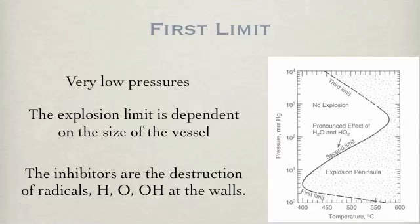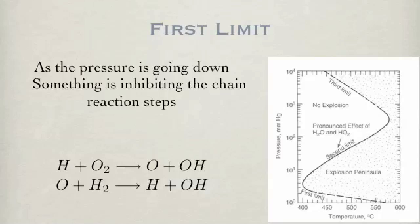The first limit is at very low pressure, well below atmospheric pressure. Experimental evidence shows that the explosion limit is dependent on the size of the vessel. This points to the destruction of radicals at the walls. Low pressure, with the reactions with the wall being more prominent, means that the number of collisions to produce the chain reaction is relatively low. A reaction at the wall acts as a termination reaction, thus lowering the explosive tendency. If the termination reactions dominate, explosion does not occur.